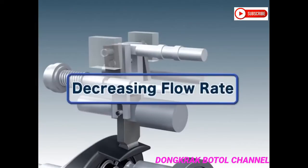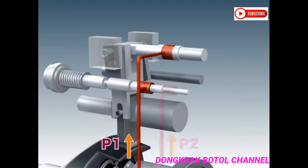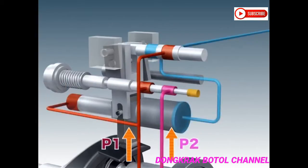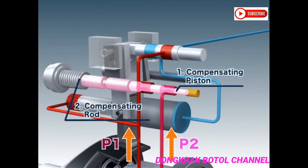Next, we will explain how the regulator decreases the flow rate. When the delivery pressure of the pump P1 or of a companion pump P2 increases, the pressure moves the compensating piston, pushing it against the compensating rod.